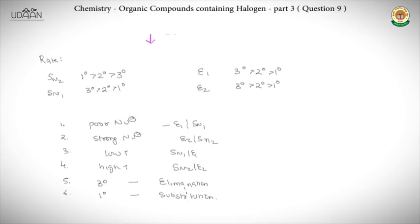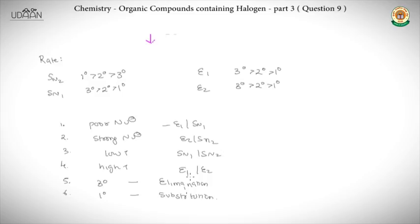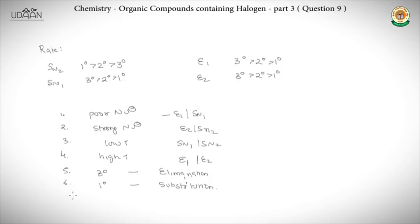Correcting a previous point: at low temperature, SN1 and SN2 reactions occur; at high temperature, E1 and E2 reactions occur. Generally, with a 3° halide, elimination product is favored; with a 1° halide, substitution product is favored. These thumb rules — poor nucleophile gives E1/SN1, strong nucleophile gives E2/SN2, low temperature gives SN1/SN2, high temperature gives E1/E2 — are essential for solving these questions efficiently.